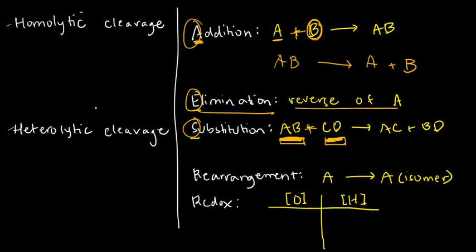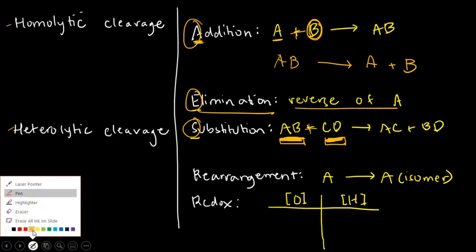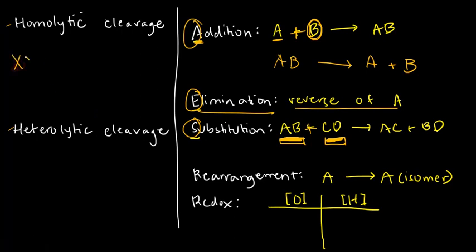Homolytic cleavage and heterolytic cleavage will give us our reagents. So for example, let's say I have my reagent XY, meaning I have X attached to Y. And then there's a supposed homolytic cleavage. When we say homolytic cleavage, homo means the same. So meaning you can imagine that here we have X and Y being split equally, meaning one electron goes to X and one electron goes to Y.